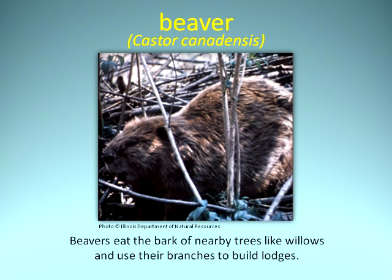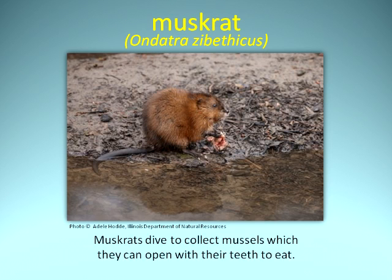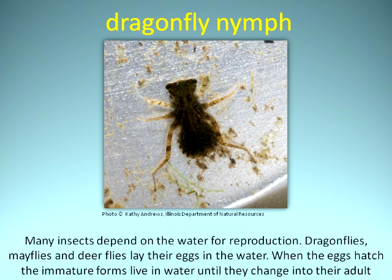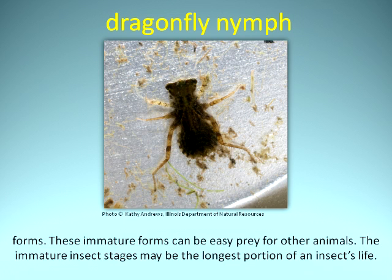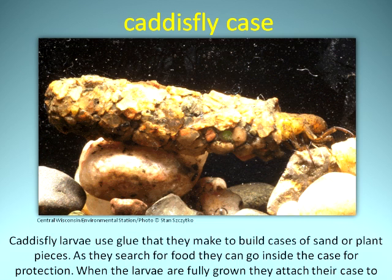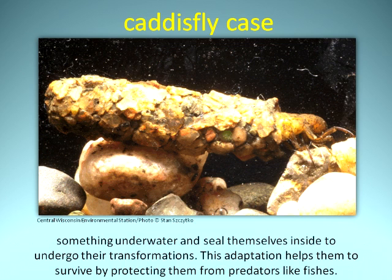Beavers eat the bark of nearby trees, like willows, and use their branches to build lodges. Muskrats dive to collect mussels which they can open with their teeth to eat. Many insects depend on the water for reproduction. Dragonflies, mayflies, and deerflies lay their eggs in the water. When the eggs hatch, the immature forms live in water until they change into their adult forms. These immature forms can be easy prey for other animals, and the immature insect stages may be the longest portion of an insect's life. Caddisfly larvae use glue that they make to build cases of sand or plant pieces. As they search for food, they can go inside the case for protection. When the larvae are fully grown, they attach their case to something underwater and seal themselves inside to undergo their transformation. This adaptation helps them to survive by protecting them from predators like fishes.